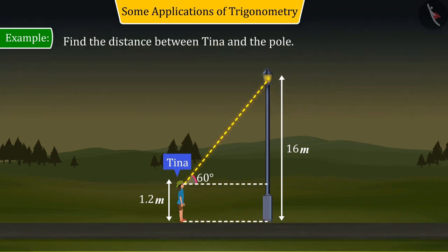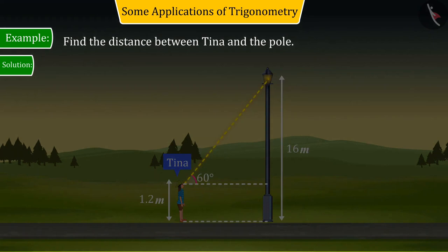Let's try to solve it. First of all, with the help of the given information, let's construct the figure and assume that the place where Tina is standing is point C and AB represents the electric pole.